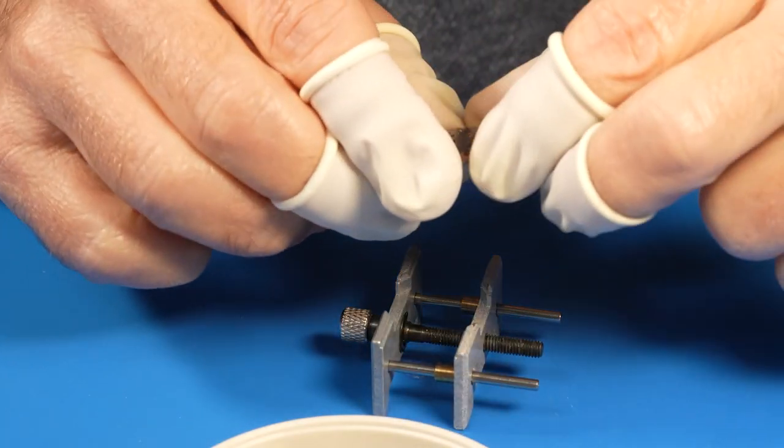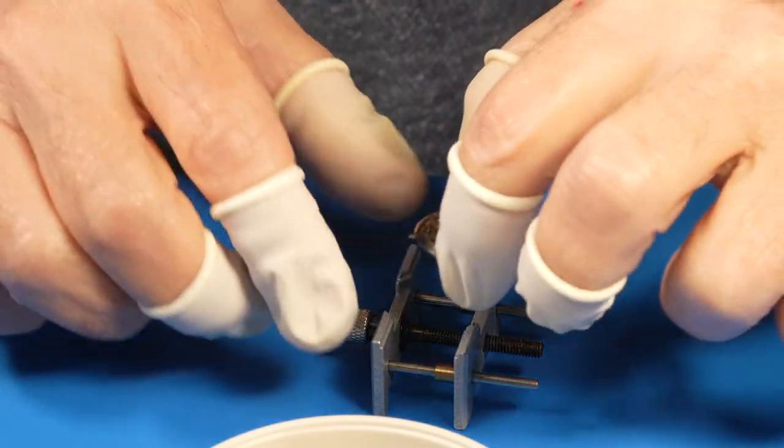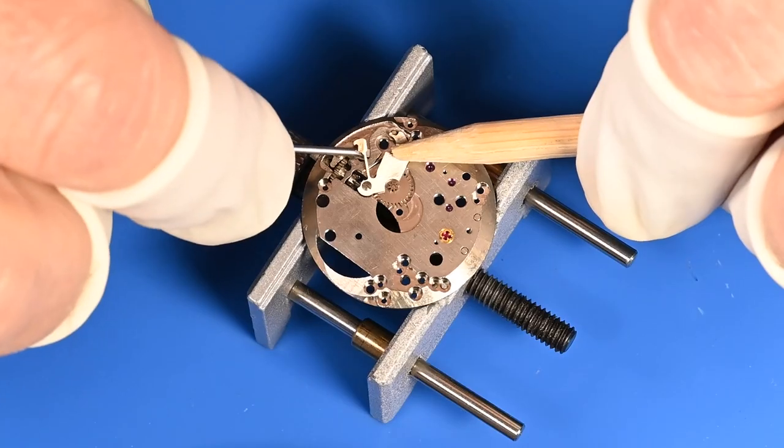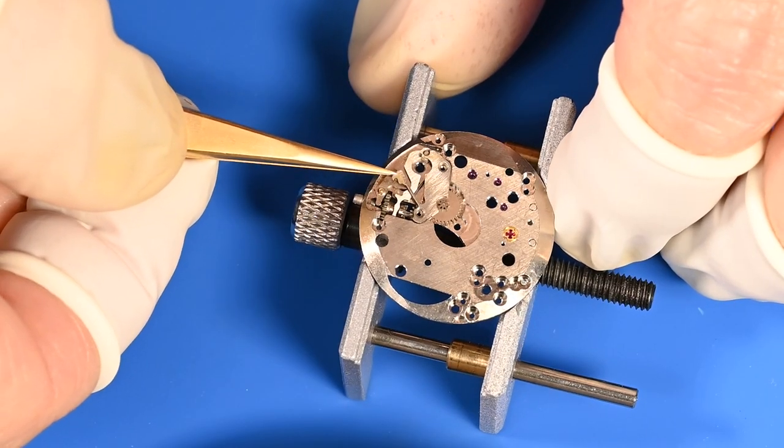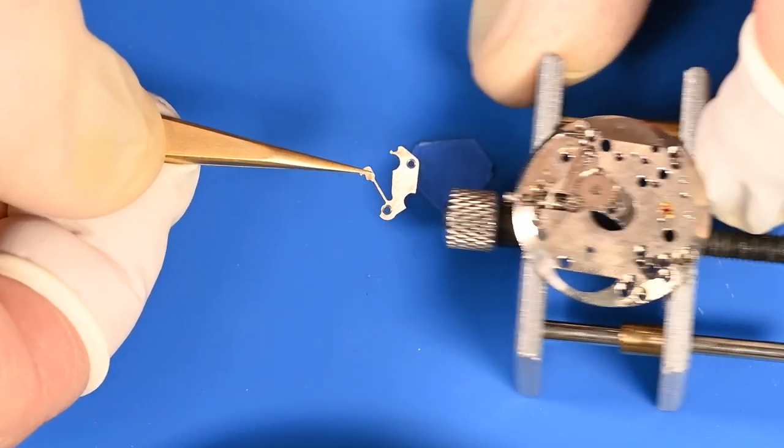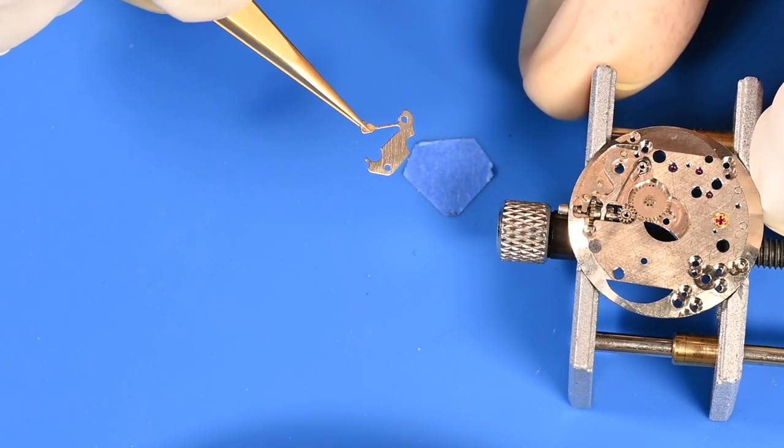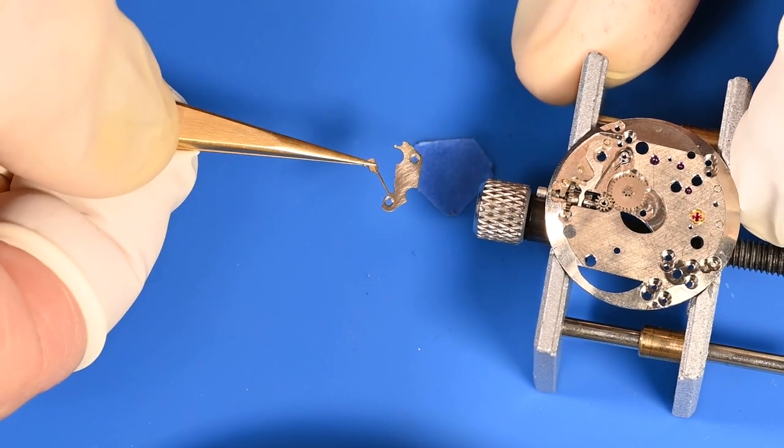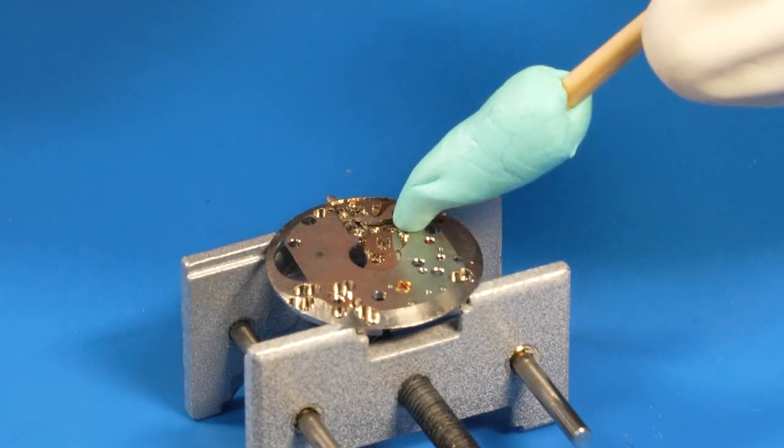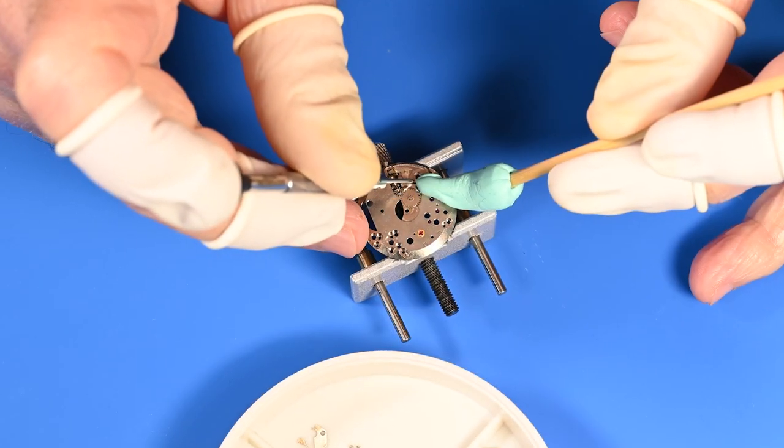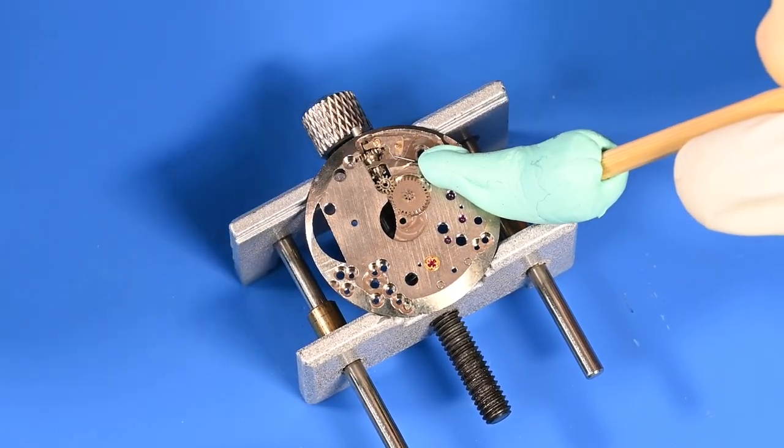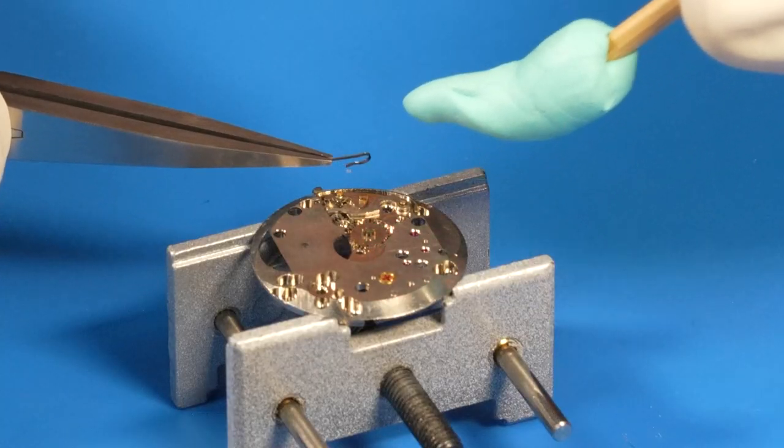So let's flip it over, and we can start having our way with the keyless works. The keyless works are the parts that set the time and wind the watch when you turn the crown, either pulled out or pushed in. On watches with a day, date, or other features, in general called complications, the keyless works is more complex. But on this basic three-hand manual wind watch, the keyless works are relatively simple. A piece of rodico will help secure the yoke spring to keep it from sailing off into infinity.